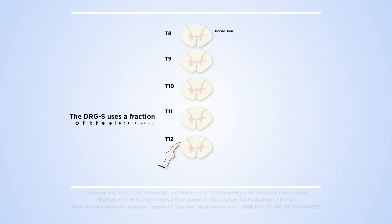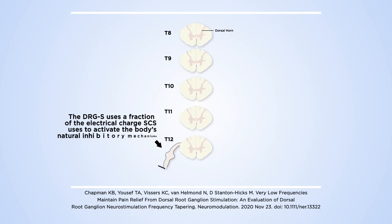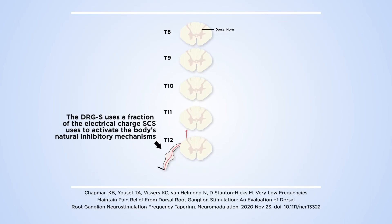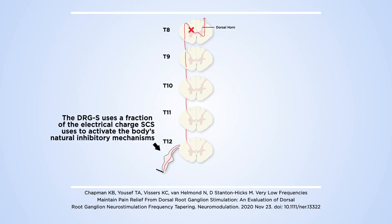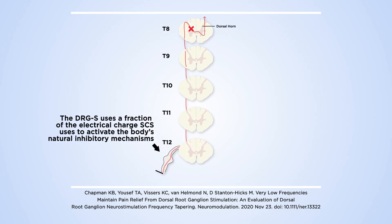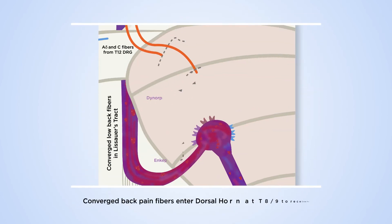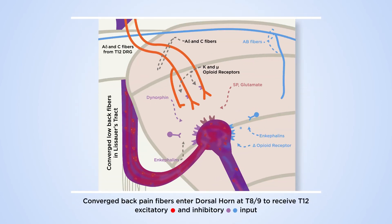The DRG stimulator uses small amounts of electricity to activate the body's natural inhibitory mechanisms. Placing it at the T12 level activates inhibition at the T8 and T9 convergence point, blocking lower back pain fibers from traveling to the brain.